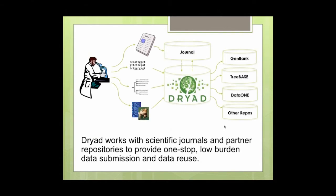Here's how things work with Dryad: a researcher writes an article and has associated data. There may be genetic data or phylogenetic trees, but then there's all the extra data — raw measurements of weights, lengths, rates, temperatures — that typically doesn't have a home. That can go into Dryad. The vision has always been that Dryad will pass off some of this data to more specific databases as appropriate. We've done a good job at the central step of collecting all the data in one place.